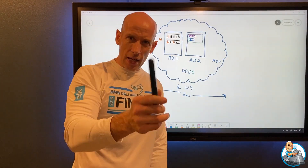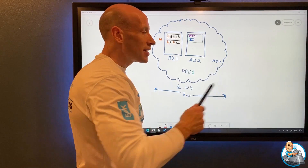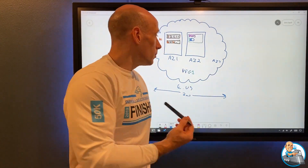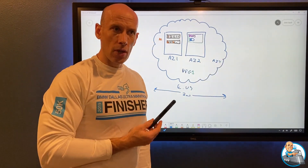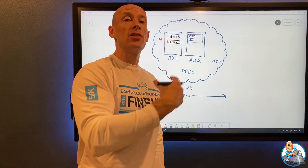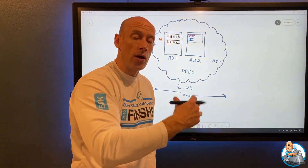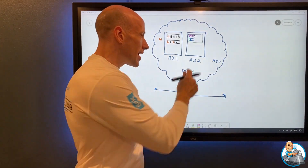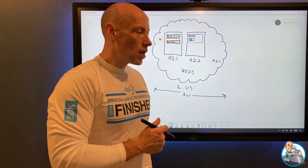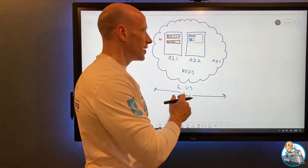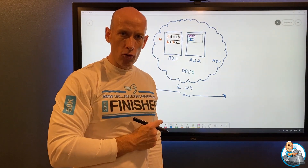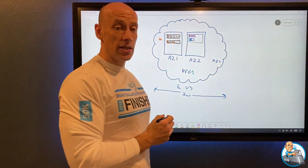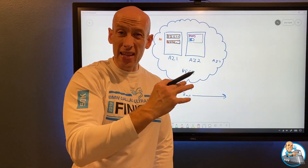I can actually add an availability set to my proximity placement group, which I now know will be in AZ2. Normally you can't mix availability zones and availability sets — you pick one or the other. But because I created my proximity placement group in AZ2, I can now add an availability set in that proximity placement group, which means that availability set is being put in AZ2 as well. It's a neat little side effect.